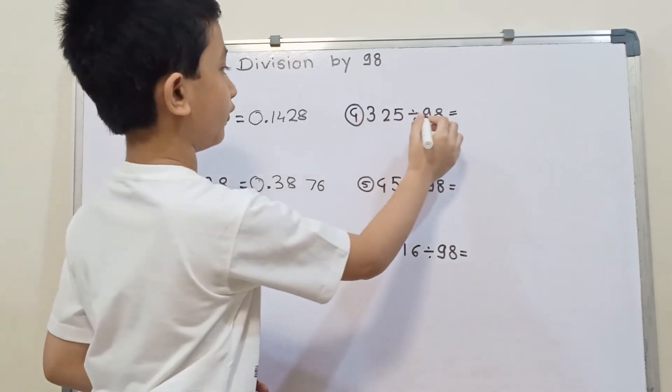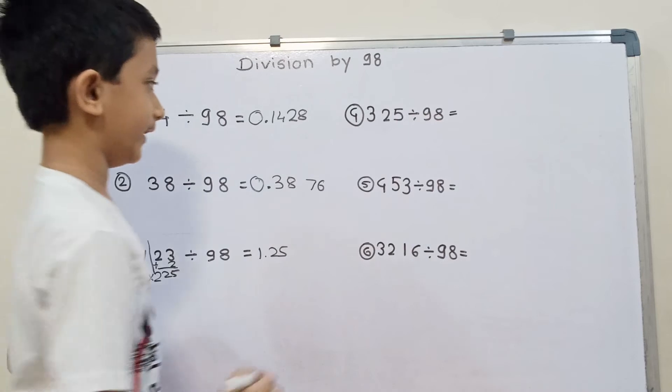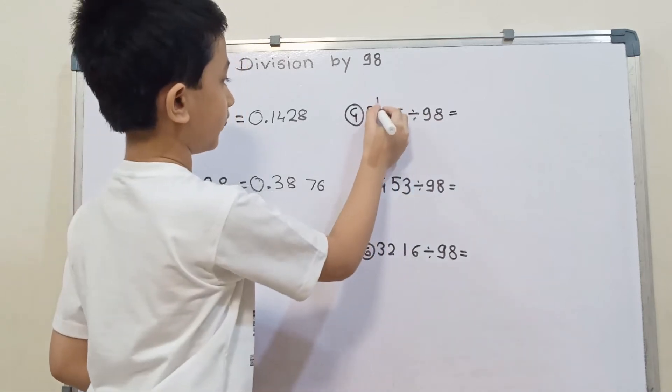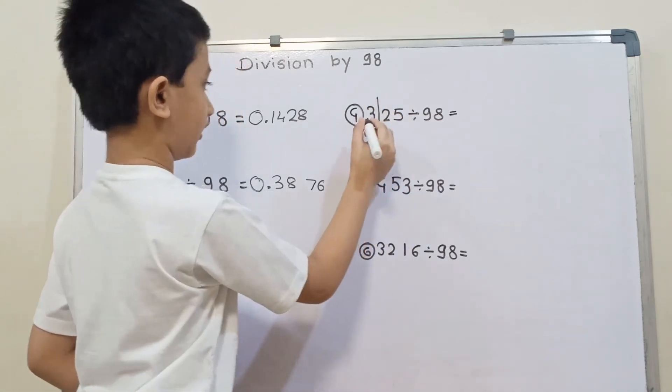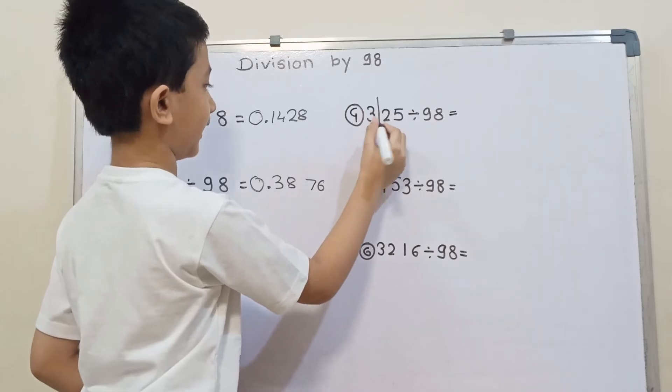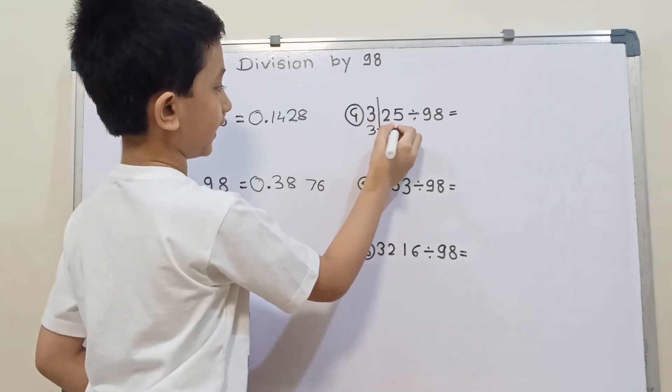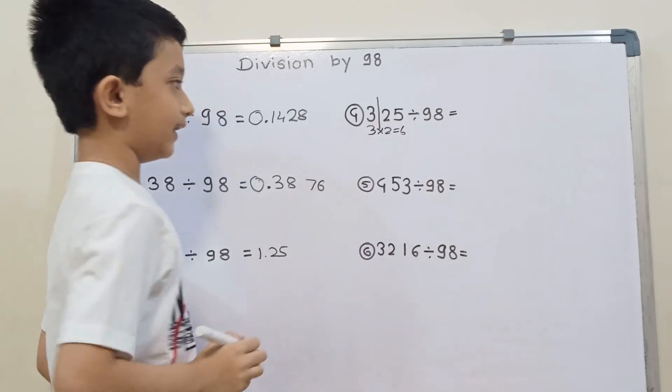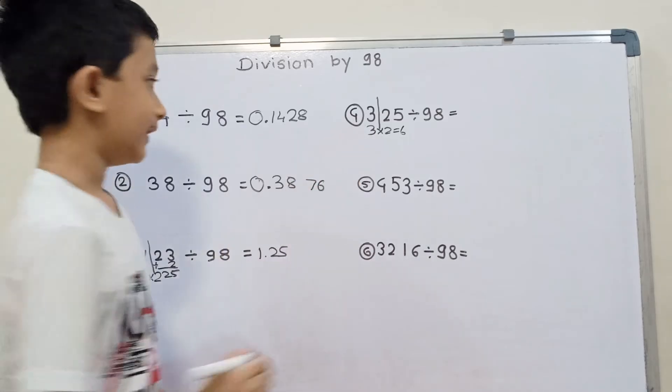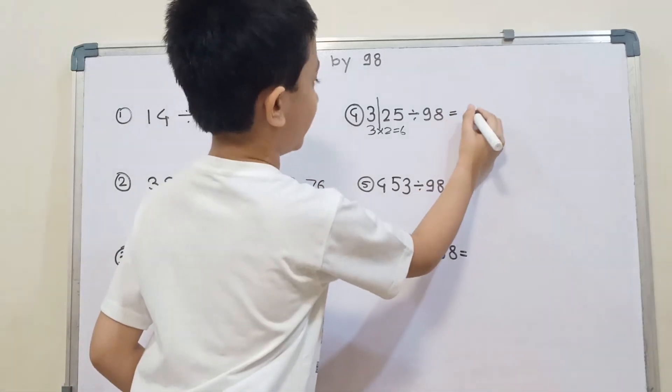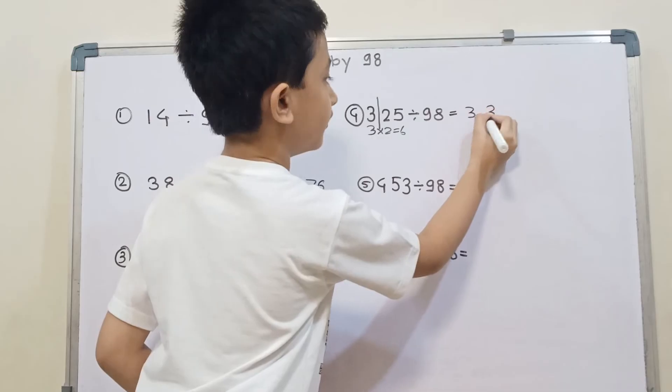Then 325 divided by 98. First we will double of 3 that is 3 into 2 that is 6. And then 25 plus 6 is 31. So the answer is 3.31.